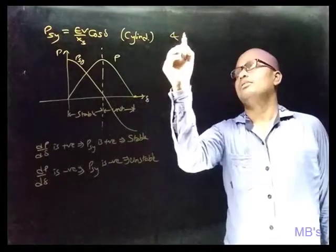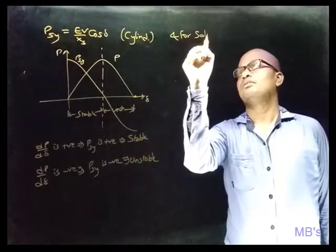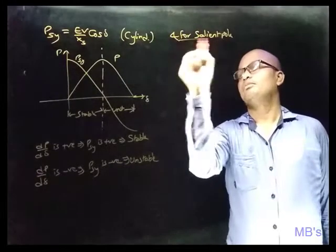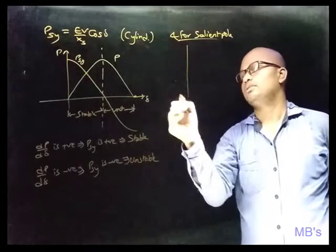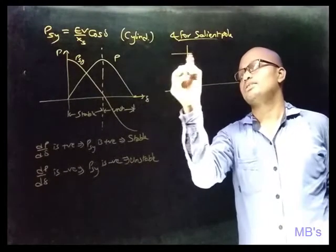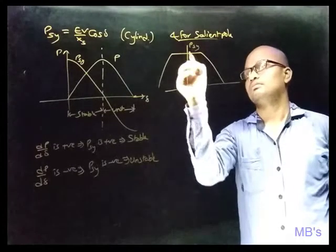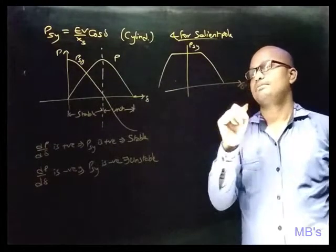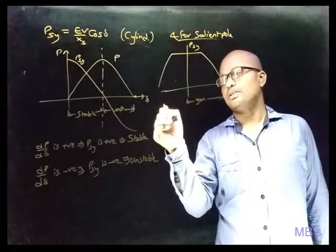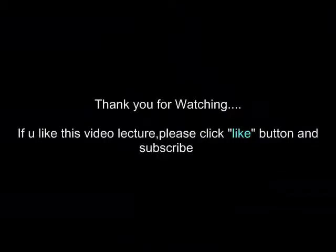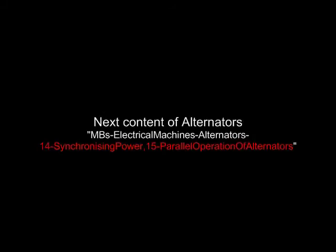If Psy is positive, the machine is stable; if Psy is negative, the machine is unstable. For the salient pole type alternator, the Psy curve follows a similar pattern, shifted due to the additional reluctance power component.